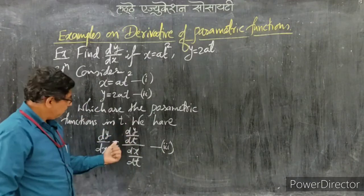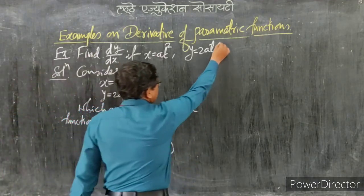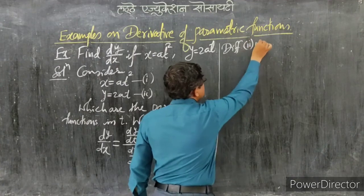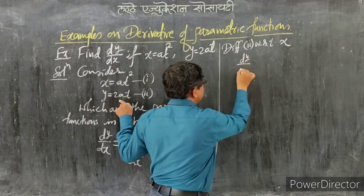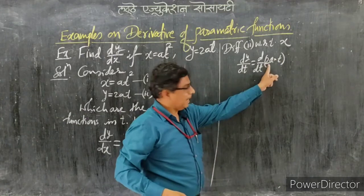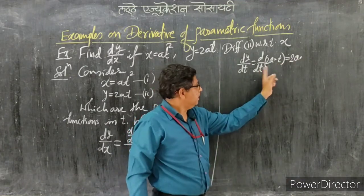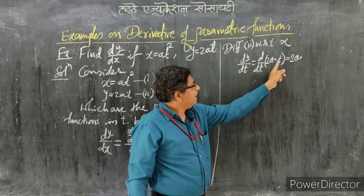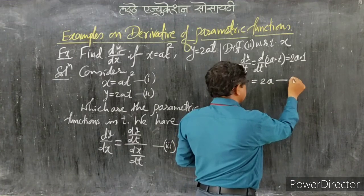Differentiating equation 2 with respect to t: y = 2at, so dy/dt = d/dt(2a·t). Since 2a is a constant, it can be taken outside: dy/dt = 2a · d/dt(t). The derivative of t with respect to t is 1, so dy/dt = 2a. Call this equation 4.